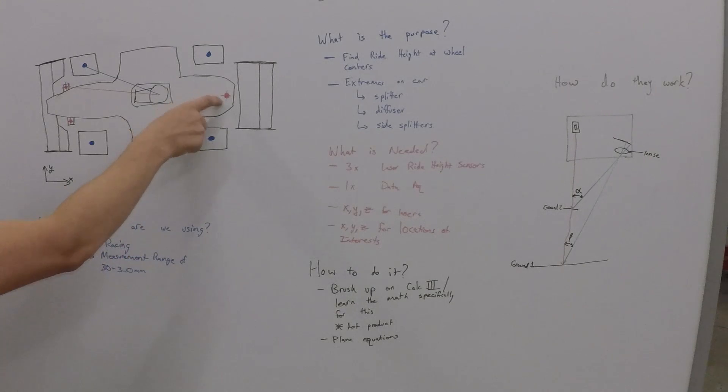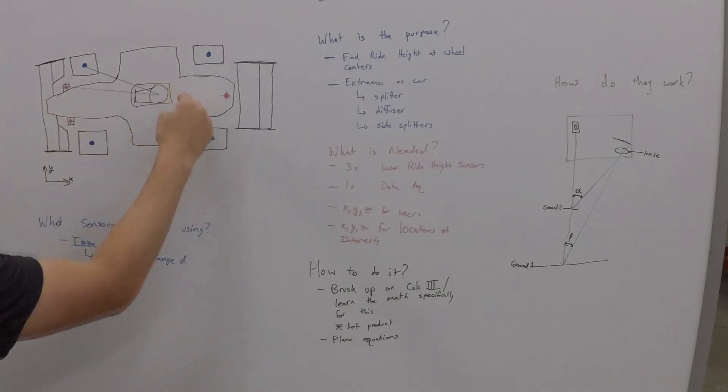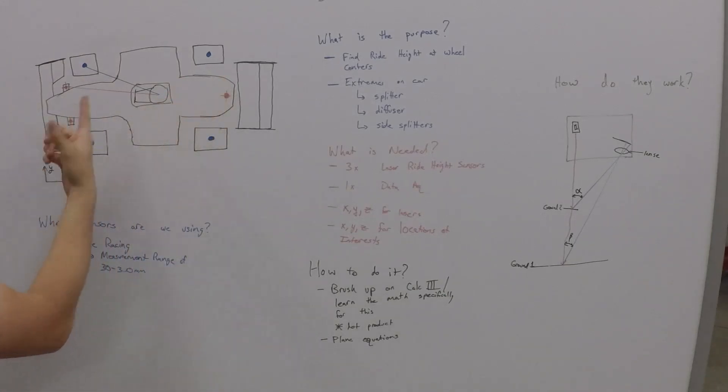And this is kind of what you're looking at. Laser sensors are in red. This is an idea of similar to how we have it set up. We have two sensors in the front that are forward of the front wheels. And then we have one sensor in the rear. Ours actually isn't behind the rear wheels. It's more like right here. It's offset a little bit. You can use it. It doesn't necessarily matter exactly where these are because you're just using math to then make a plane.